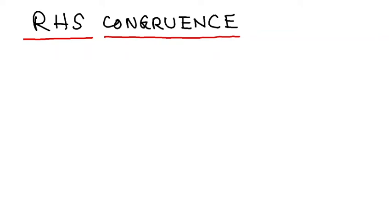Hello students, till now we have covered four rules of congruence. Now I am going to discuss the last one. It is called RHS: right angle, hypotenuse, and side. Obviously, you can understand from the name that I have to take two right angles.